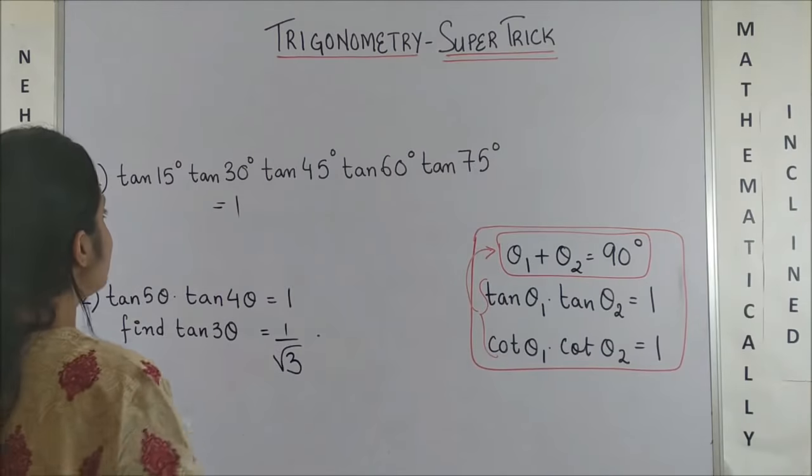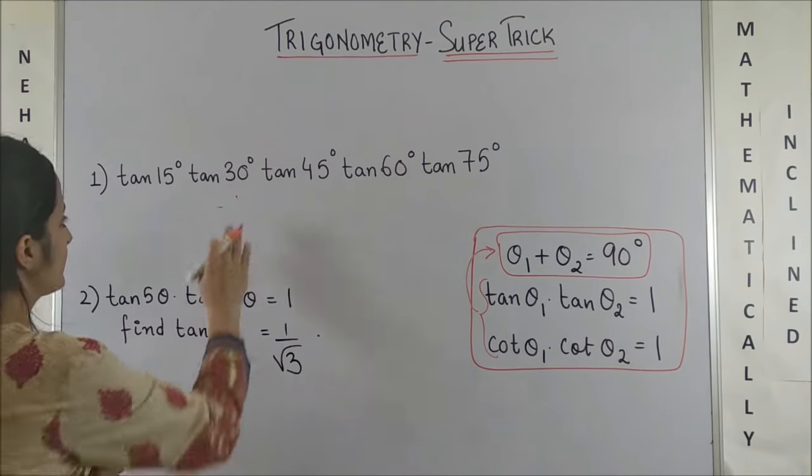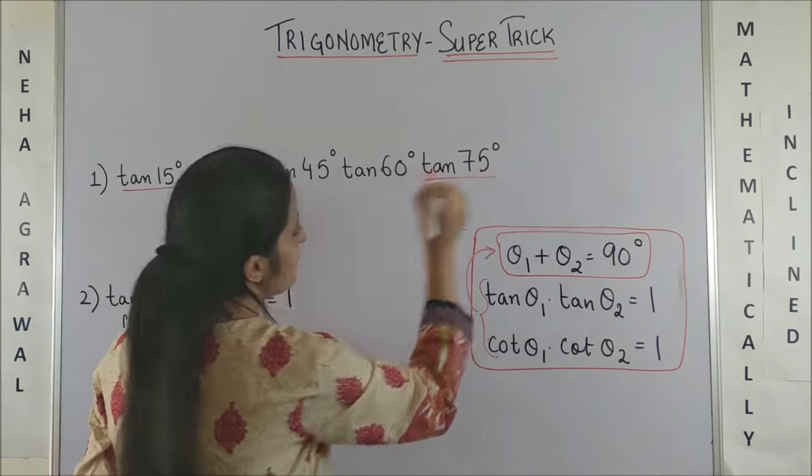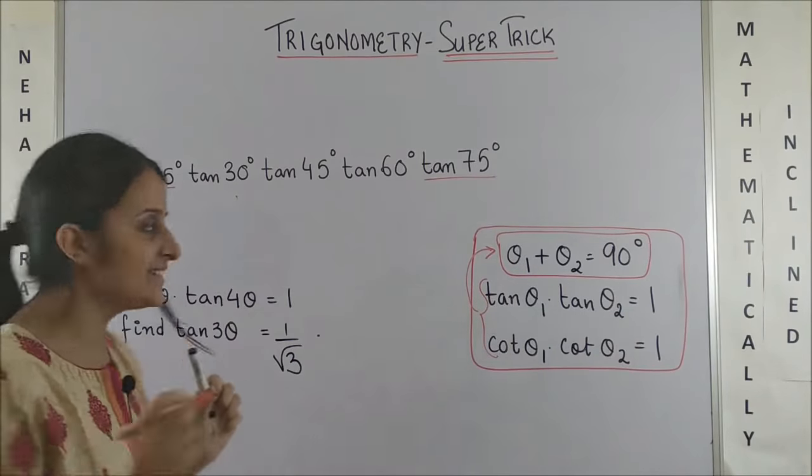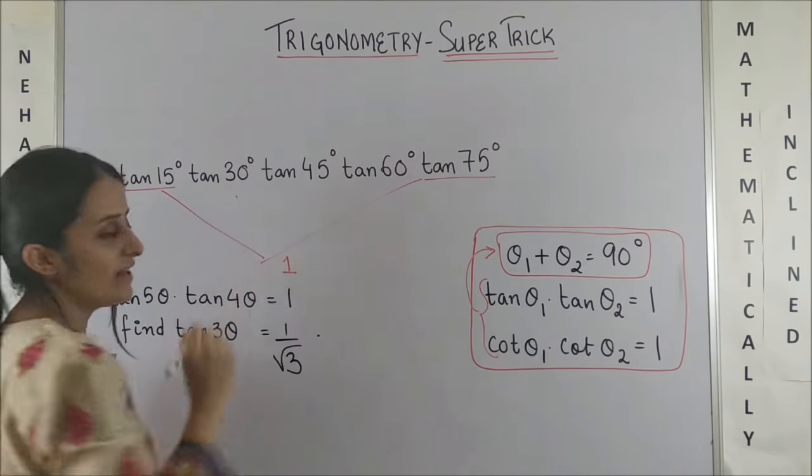So, making use of this logic as you can clearly see here, tan 15° and tan 75° - if I combine 75 + 15 is 90 degrees. So, tan 15° tan 75° would be 1.